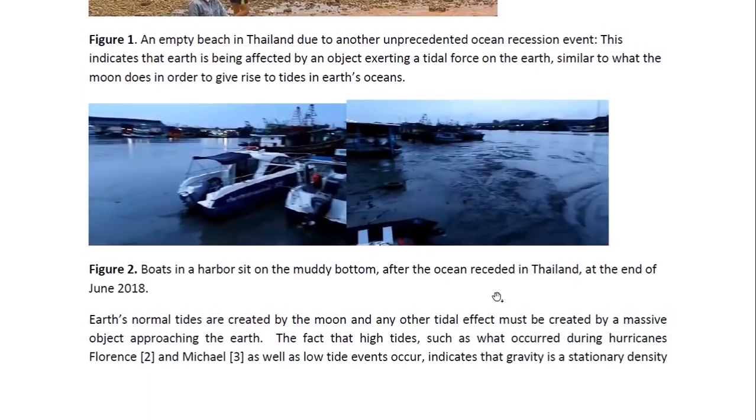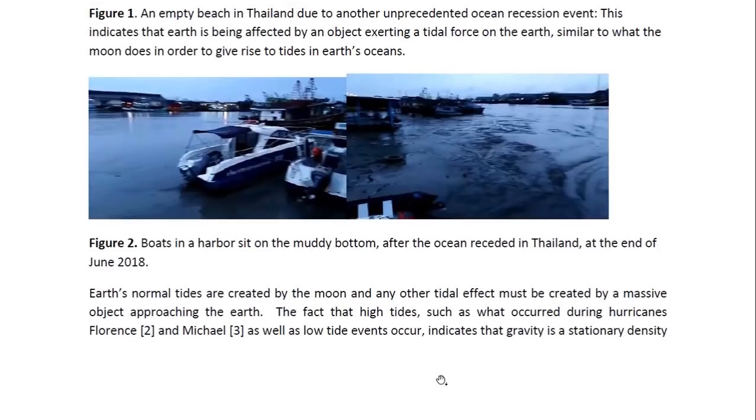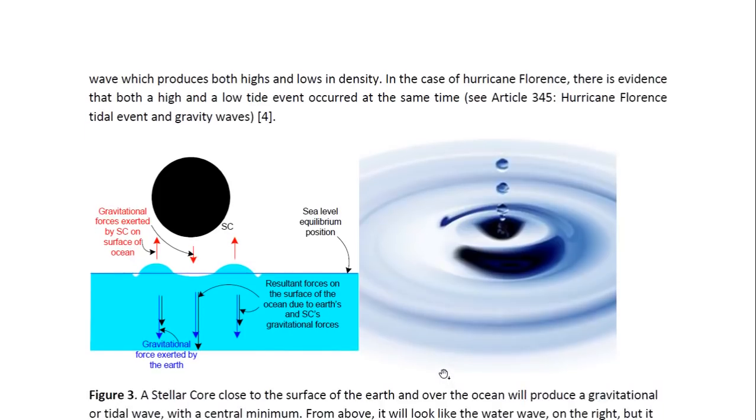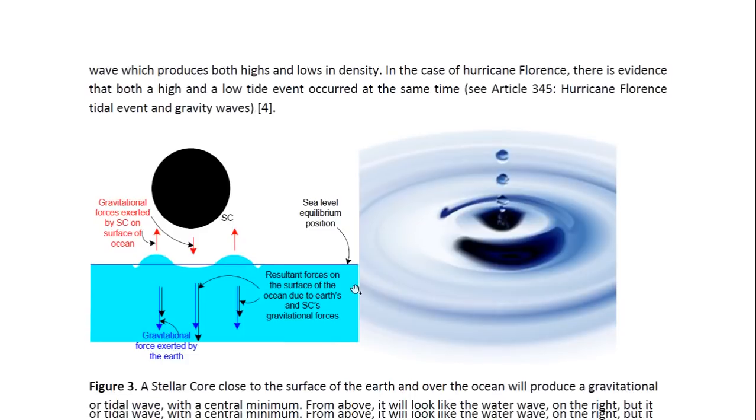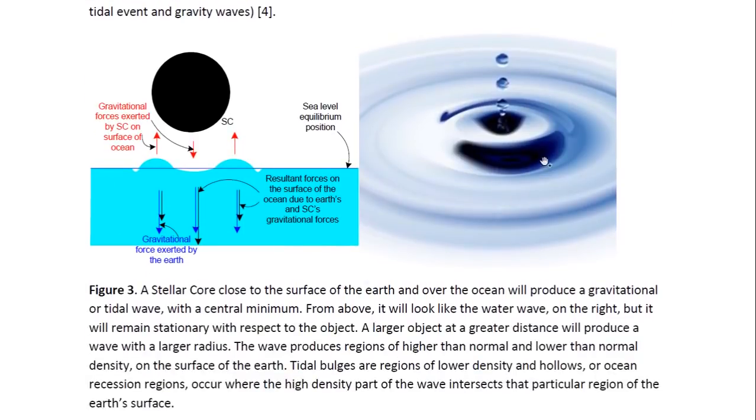Earth's normal tides are created by the moon and any other tidal effect must be created by a massive object approaching the Earth. The fact that high tides such as what occurred during hurricanes Florence and Michael, as well as low tide events occur, indicates that gravity is a stationary density wave which produces both highs and lows in density. In the case of Hurricane Florence, there is evidence that both a high and a low tide event occurred at the same time. See Article 345, Hurricane Florence, Tidal Event and Gravity Waves for more details. And this is what these waves look like.